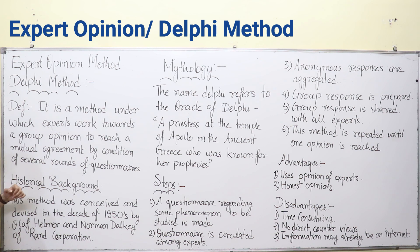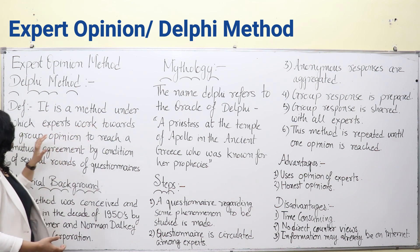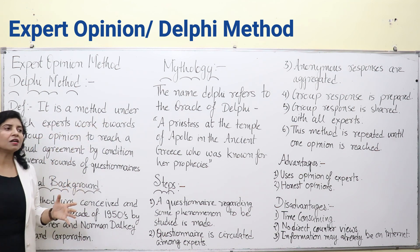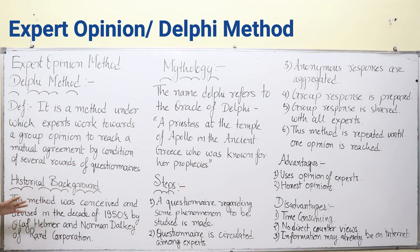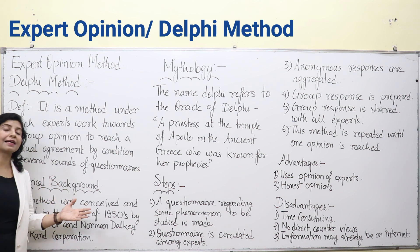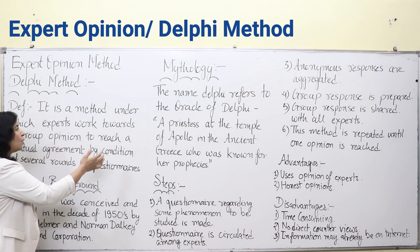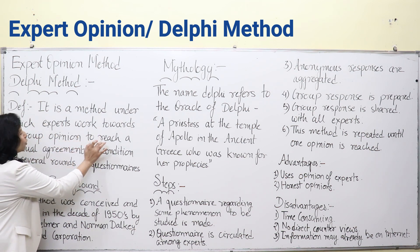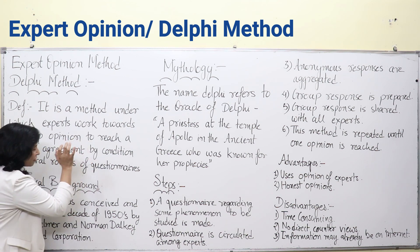What is the definition of this method? It is a technique — a process under which experts work towards a group opinion. Because if their opinions are scattered or discrete, you won't be able to reach a single opinion and demand forecasting cannot be successful. For that, experts need to reach a mutual agreement through several rounds of questionnaires.